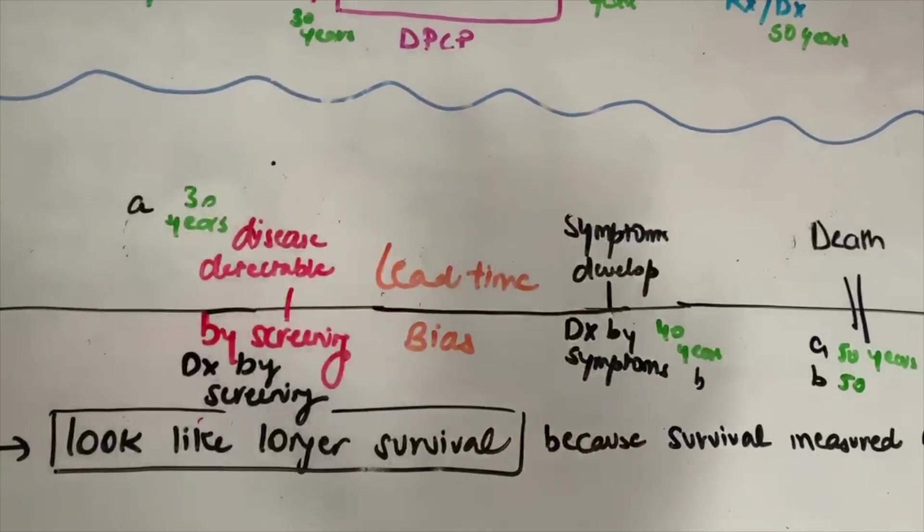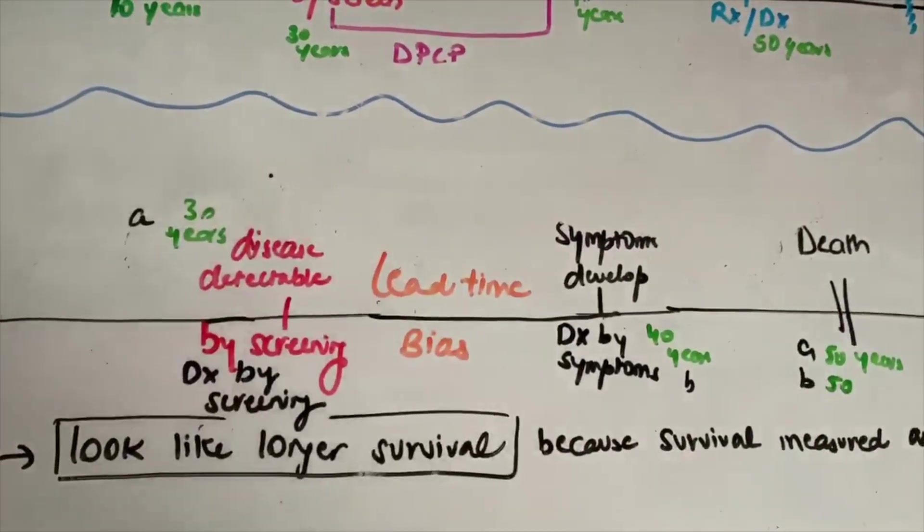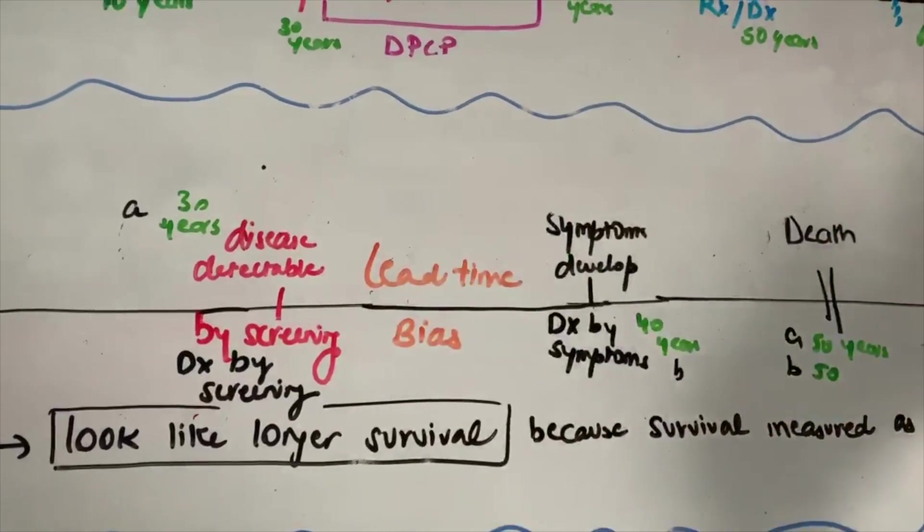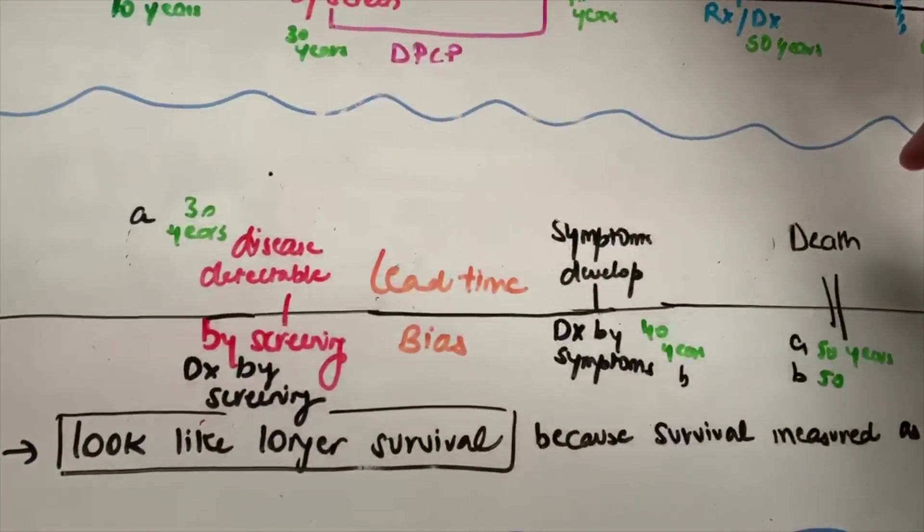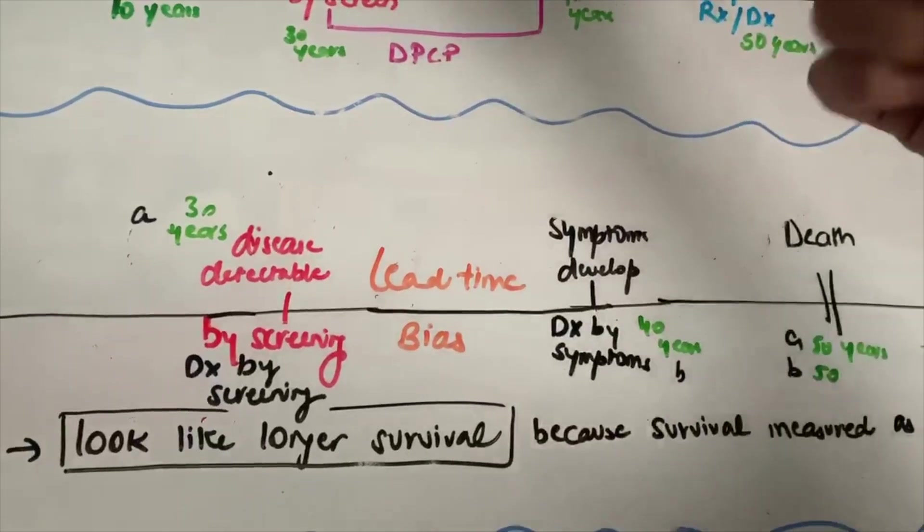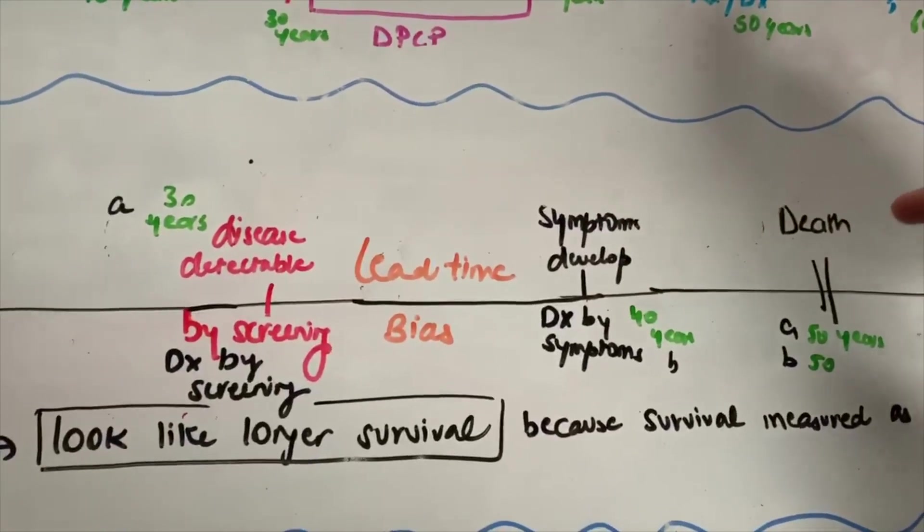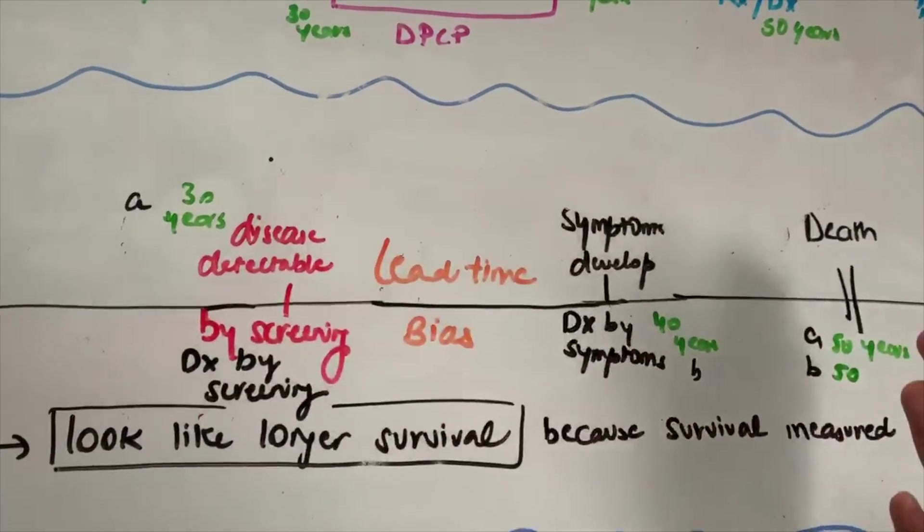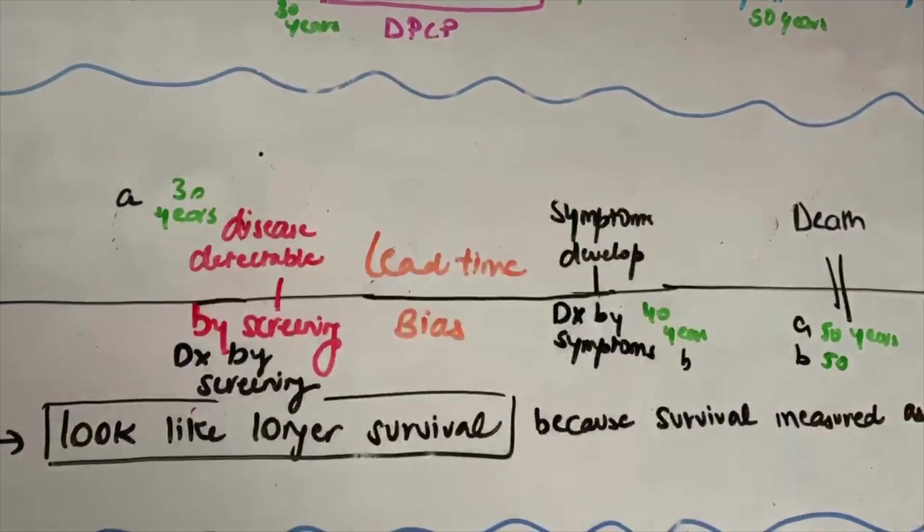So lead time bias makes it look like the person who got diagnosed by screening test had longer survival. Obviously, right? He got diagnosed at 30 but died at 50. Symptom guy got diagnosed at 40 but died at 50. So it makes it look like the screening test somehow prolonged the survival of the person, when in reality it did not do anything.